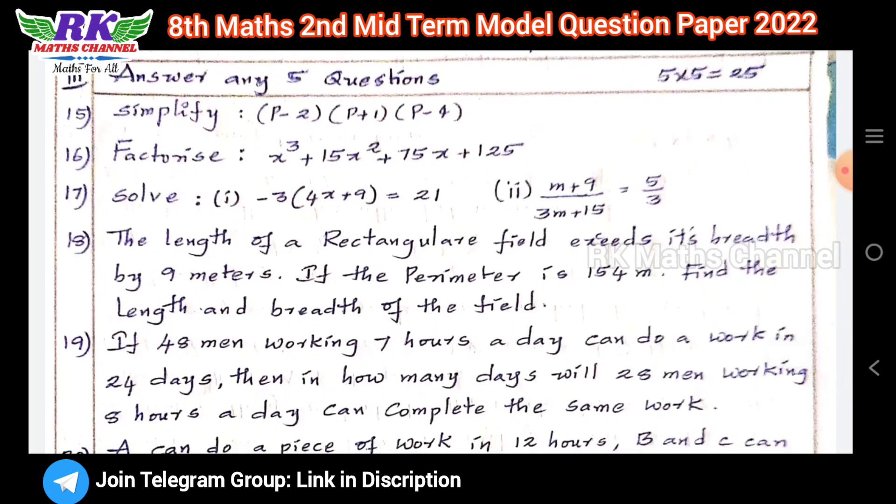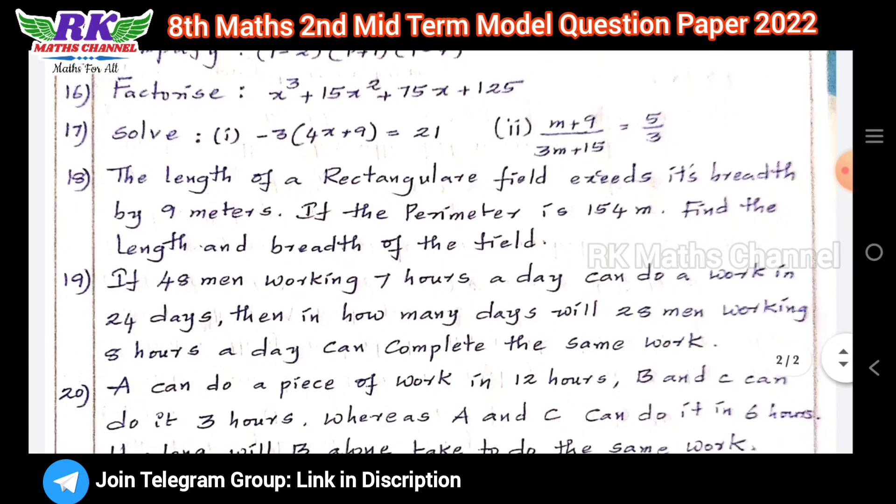Question 18: The length of a rectangular field exceeds the breadth by 9 meters. You have to solve it and find the length and breadth by forming a linear equation.